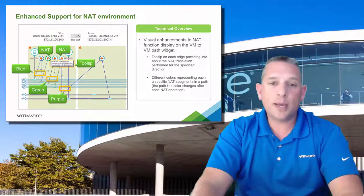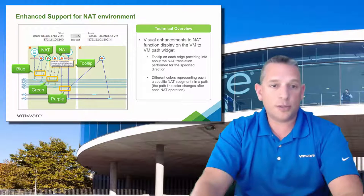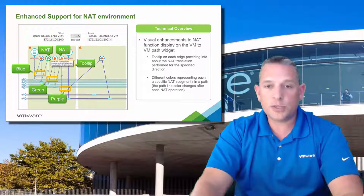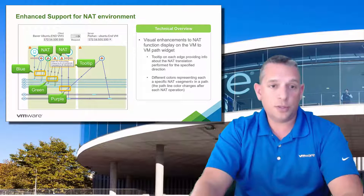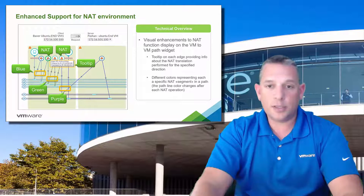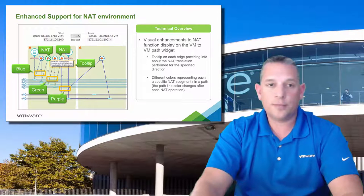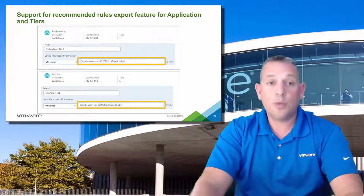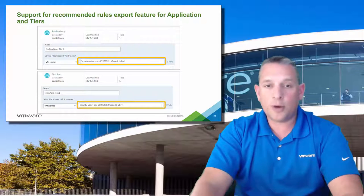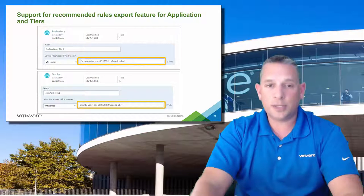Visual enhancements were made to make the VM-to-VM path easier in regards to network address translation or NAT. The tooltip now shows the originating source IP as well as the translated IP address, and indicates NAT as being used. The visual display also reflects different NAT segments using different colored lines so you know they are different. We've also added support for exporting firewall rules, not just for security groups, but also for applications and tiers.